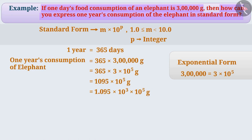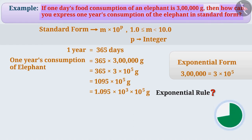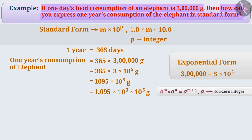Can you tell us which exponential rule we can use to write it in simpler form? Think for a while. We will use the rule: a to the power of m into a to the power of n is equal to a to the power of m plus n. With the help of this, we can write 10 to the power of 3 into 10 to the power of 5 is equal to 10 to the power of 3 plus 5, which is equal to 10 to the power of 8.